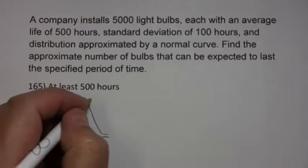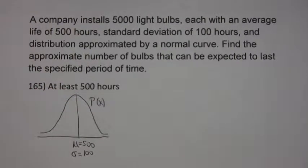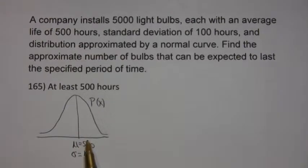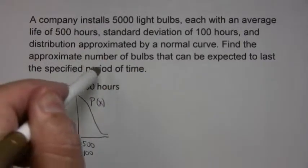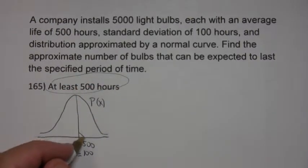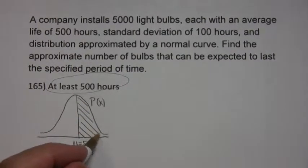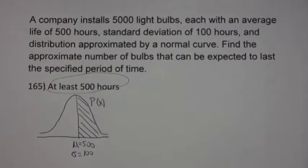Now, that normal curve gives the probability of the x value taken on any particular value. And we want to know the probability that the bulb can be expected to last at least 500 hours. Well, 500 hours happens to be the mean. So that's the area we're looking for.